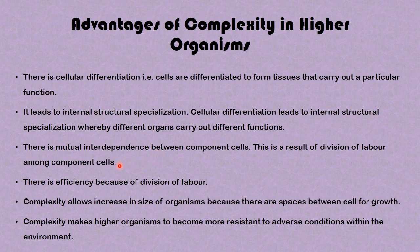Just like we have the nerve cell that carries out a specific function, the blood cell which carries out a specific function, and the sex cells (gametes) which carry out a specific function — all these cells work together and are interdependent to keep the organism alive. There is efficiency because of division of labor. Complexity also allows an increase in the size of organisms because there are spaces between cells for growth, and it makes higher organisms more resistant to adverse conditions in the environment.